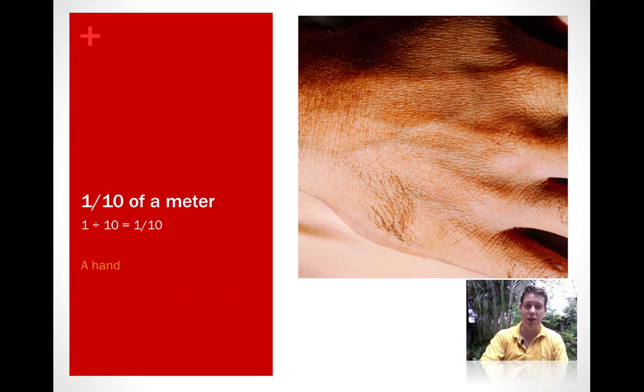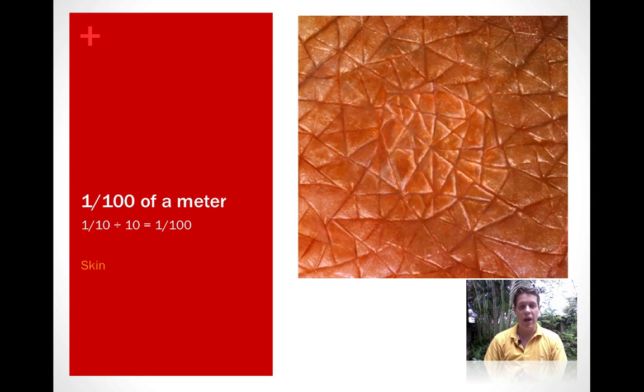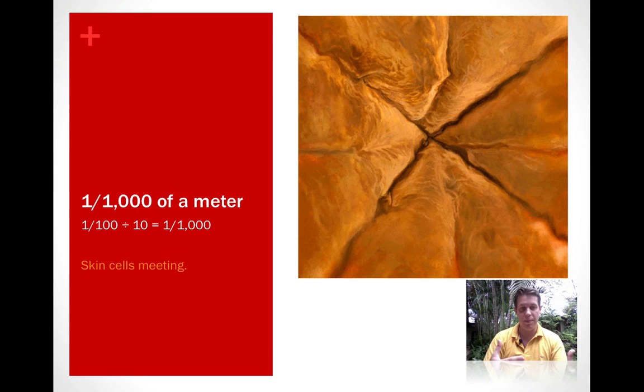We take the 1/10 of a meter and divide by 10. Well, now we're down to 1/100 of a meter. We just see some of the texture of the man's skin. If we divide the 1/100 of a meter and divide that by 10, we get 1/1000 of a meter. We're starting to see some of the skin cells there.